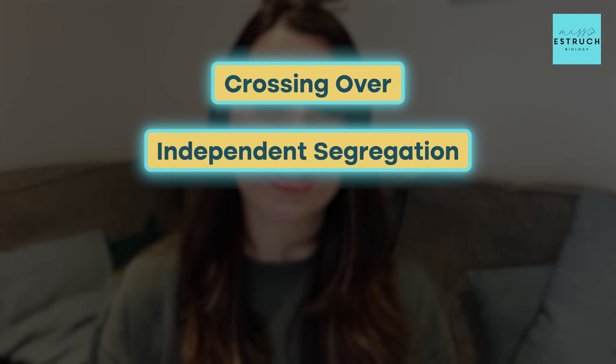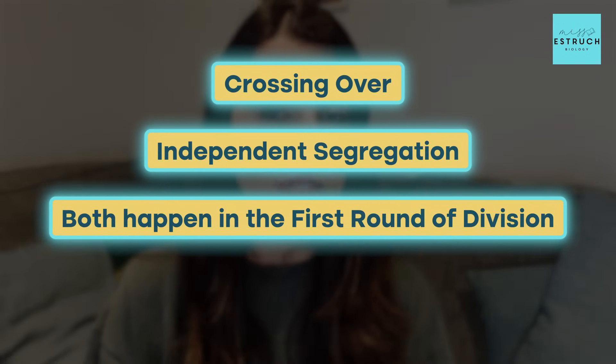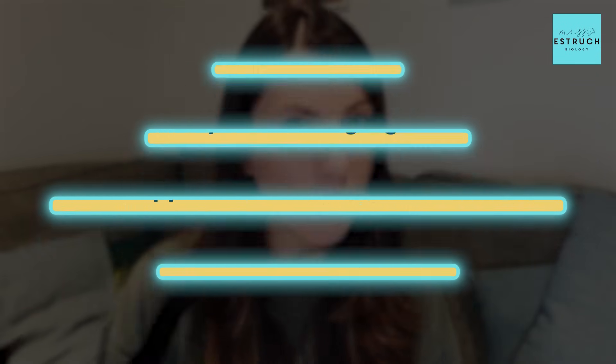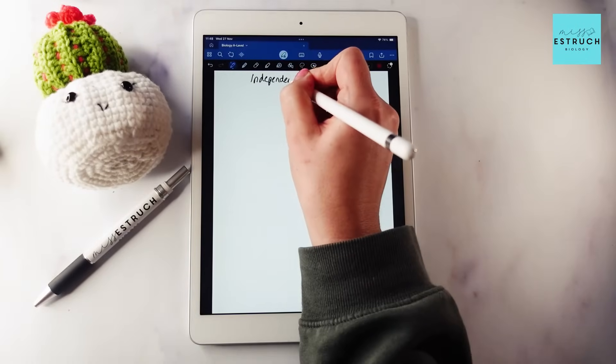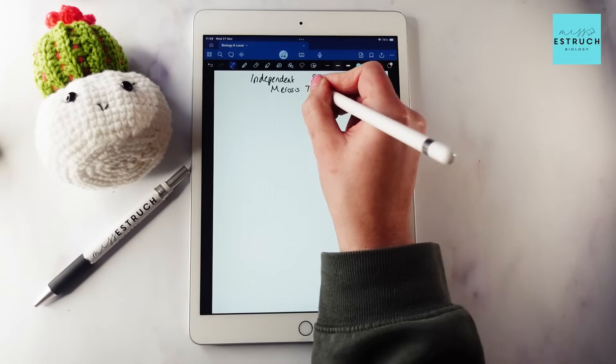The two processes in meiosis that result in genetically different gametes are crossing over and independent segregation. For AQA that is the key focus — knowing that crossing over and independent segregation both happen in the first round of division, also known as meiosis one. You need to know the details of each process, so I'm going to do some diagrams now to help you get your head around it.